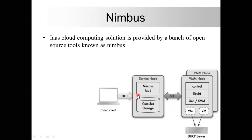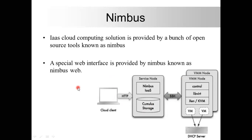Nimbus makes available remote resources on a lease basis by deploying virtual machines on those resources. After deploying, Nimbus configures them to represent the environment expected by the user. A special web interface called Nimbus Web is provided by Nimbus, and its role is to handle administration and user-related functions in a user-friendly manner.